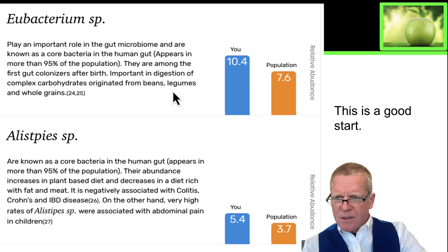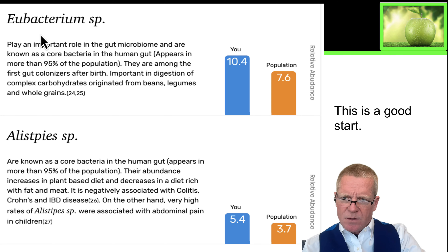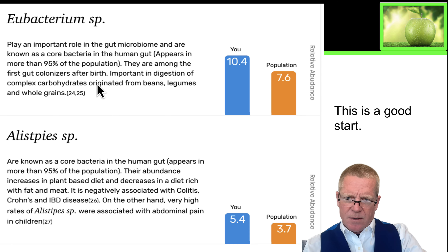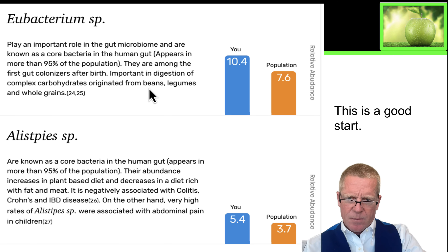Now, if we start to look at specific species, you can see that, for example, Eubacterium — my Eubacterium presence is a little higher than the general population. These are important for digestion of complex carbohydrates and suggest that my system is good at coping with beans, legumes, and whole grains.